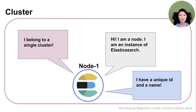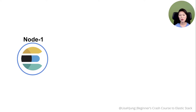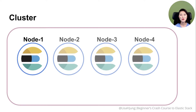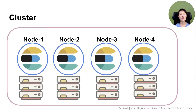We'll get to what that is in a bit. When you start up a node, a cluster is formed automatically, and you can have one to many nodes in a cluster. These nodes are distributed across separate machines, but they all belong to the same cluster and work together to accomplish a task.